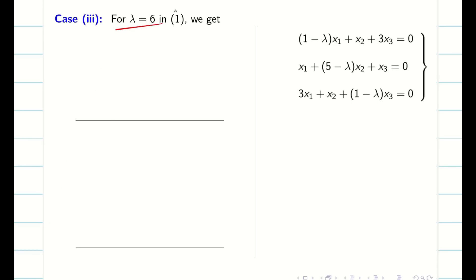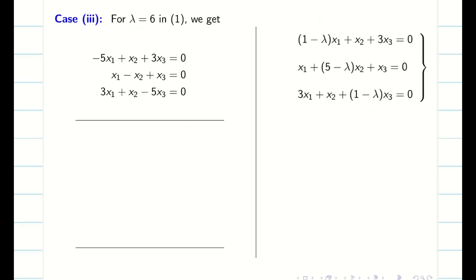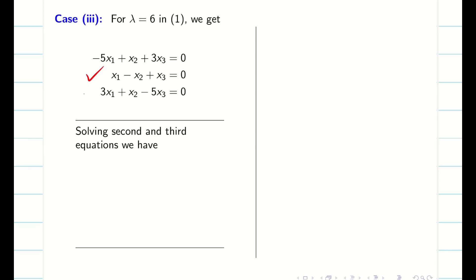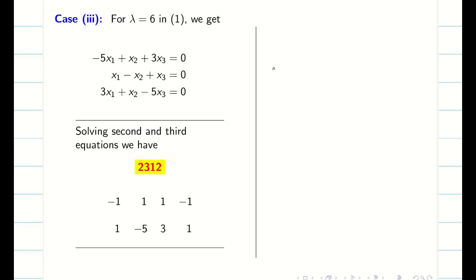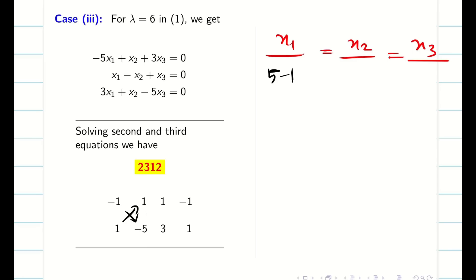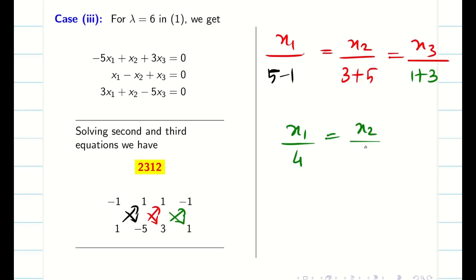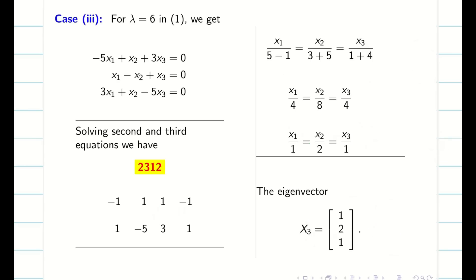For lambda equal to 6, subtracting 6 gives diagonal entries minus 5, minus 1, minus 5. Taking the second and third equations with code 2,3,1,2, the determinant gives X1 equal to 4, X2 equal to 8, X3 equal to 4. The simplest eigenvector is 1, 2, 1, which is written as X3.